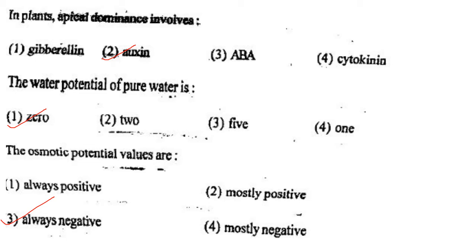Next one: In plants, apical dominance involves option 1, gibberellin; option 2, auxin; option 3, abscisic acid; option 4, cytokinin. Answer is option 2: auxin.